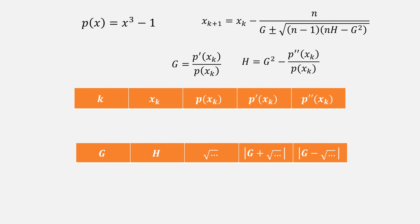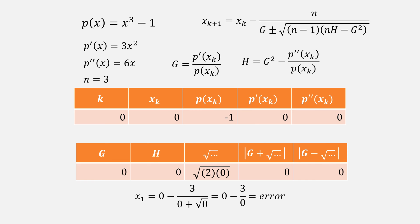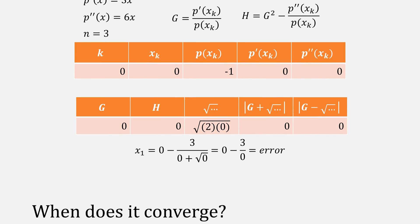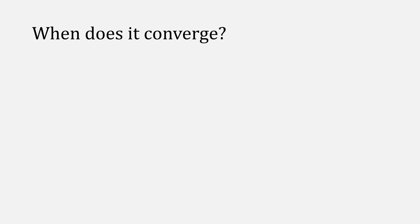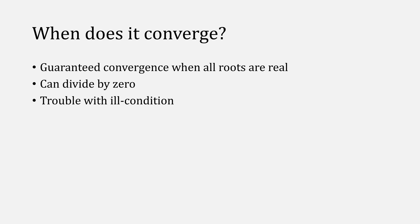Let's quickly go over one last example, which is x cubed minus 1. Find p prime and p double prime, and since we're dealing with a cubic, n is 3. Let's just start from the value of 0, plug everything in, and we end up dividing by 0. So Laguerre's method isn't always guaranteed to find our root. So when does it converge? Recall that Acton mentioned when all roots are real it is guaranteed to converge, but otherwise we can end up dividing by 0 or have trouble with ill-conditioned polynomials. But when it does converge, it does so quickly with cubic convergence order, unless there's multiplicity in which case it is linear.